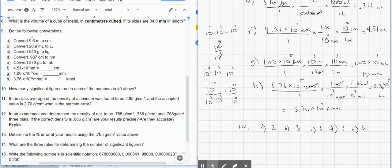F has 4.51 — the times 10 to the 7th is just telling us the zeros that come after, and they're not following a decimal if we took it out of scientific notation. Moving the decimal 7 places gives 451 with 5 zeros, none following a decimal. So the only significant figures are 4, 5, and 1 — F has 3 sig figs. For G, the 1 is significant and the trailing zeros are after a decimal, so G also has 3 sig figs. And H — the 3, 7, and 6 are the only ones — 3 sig figs.